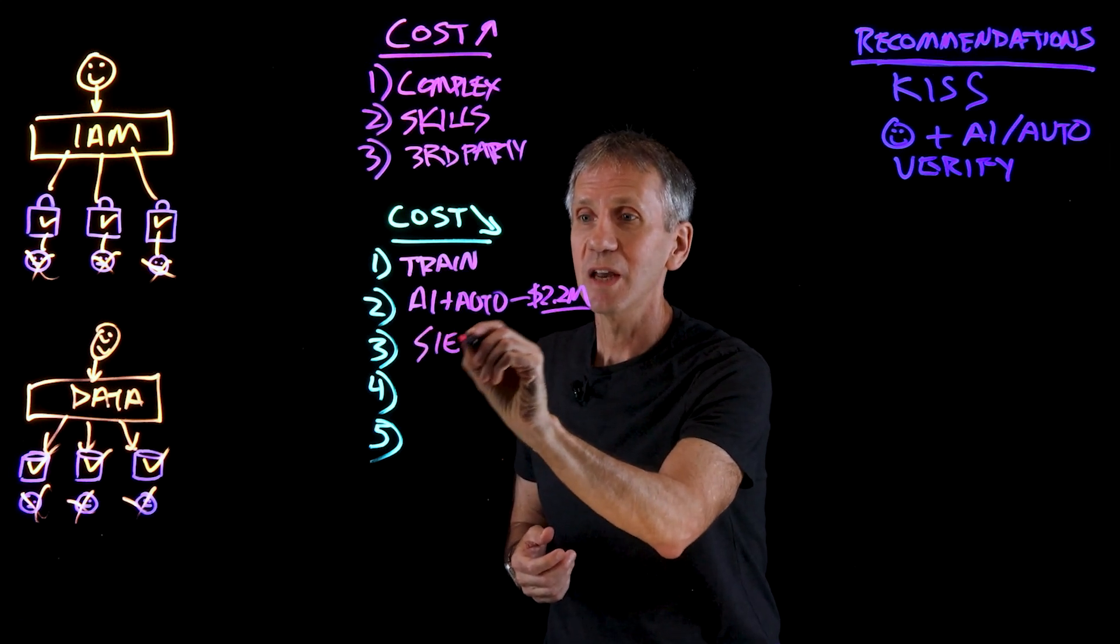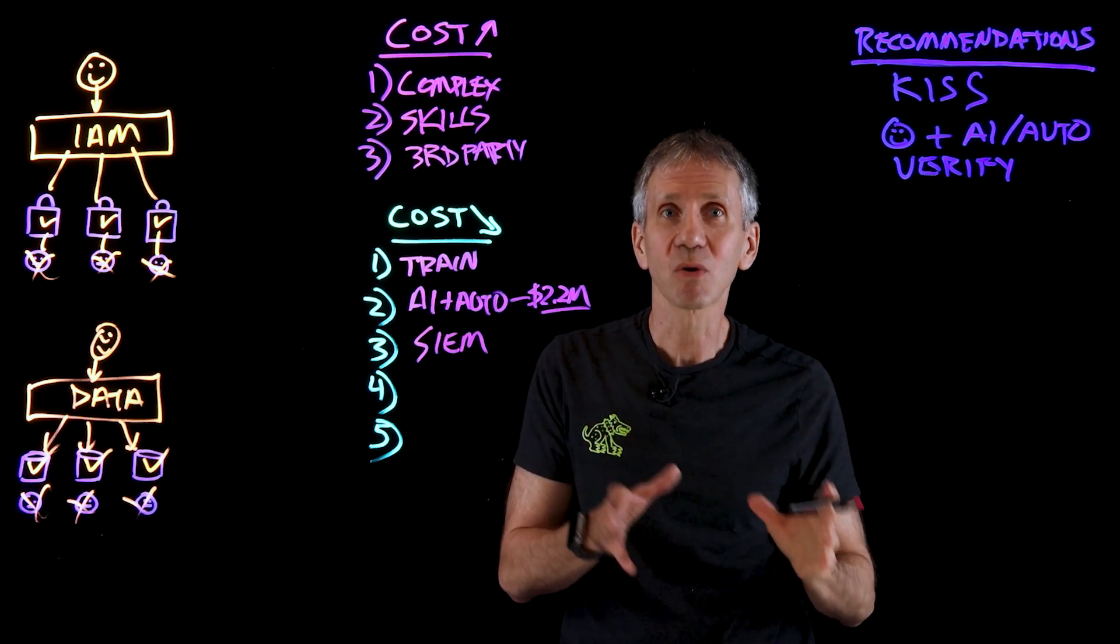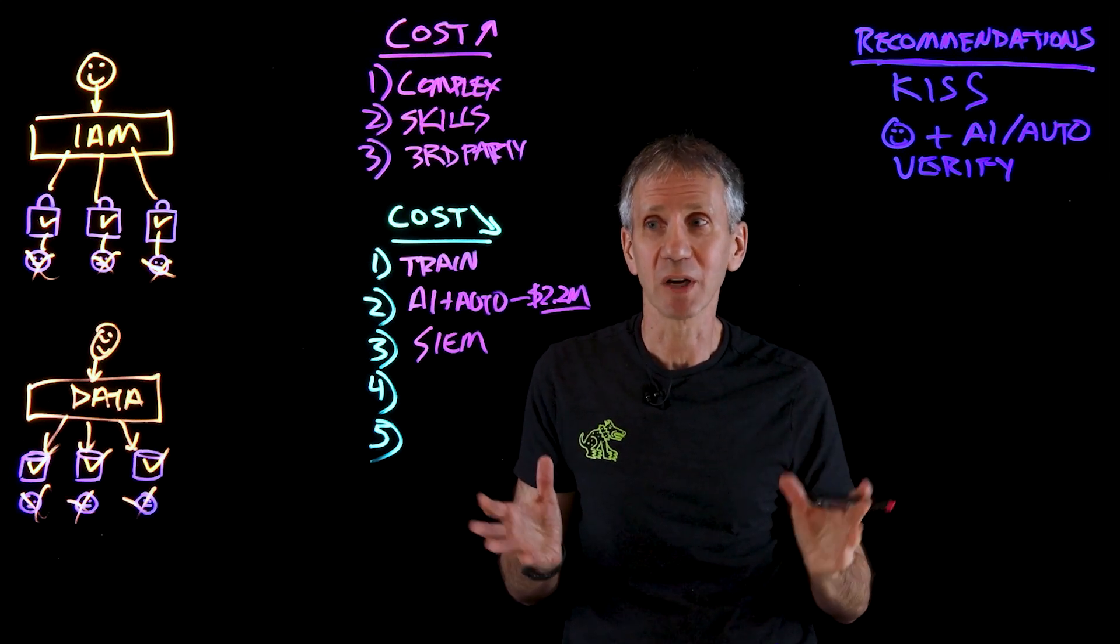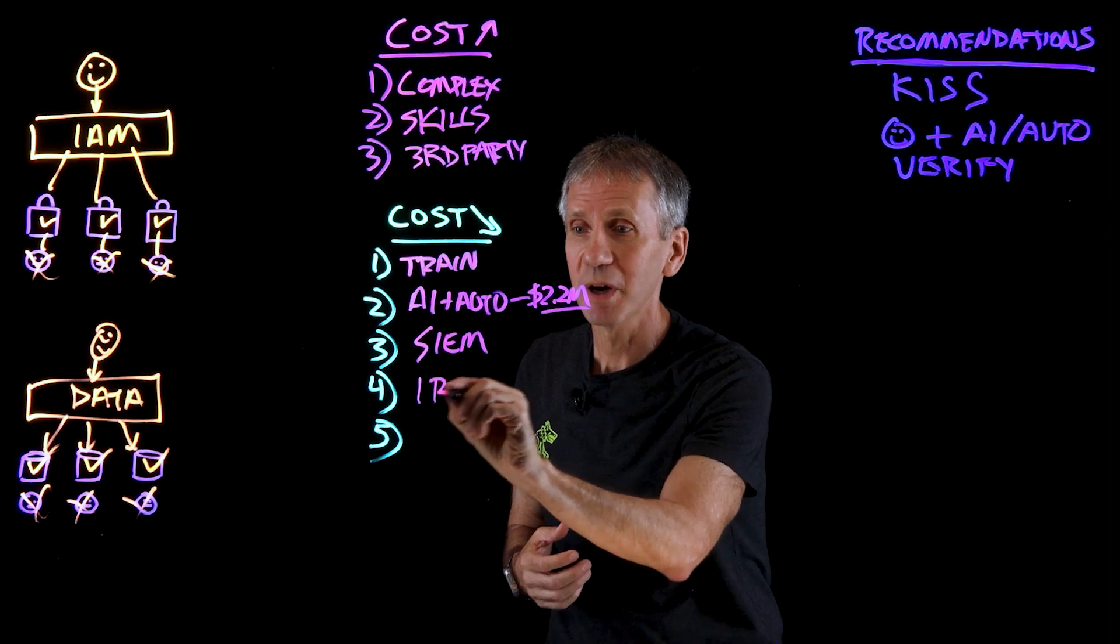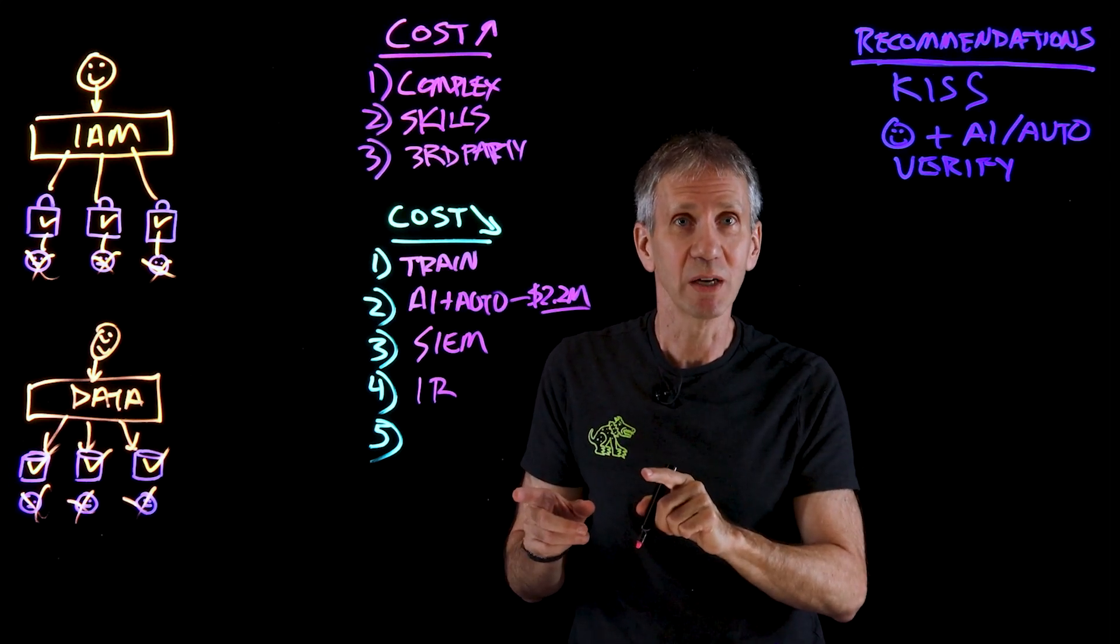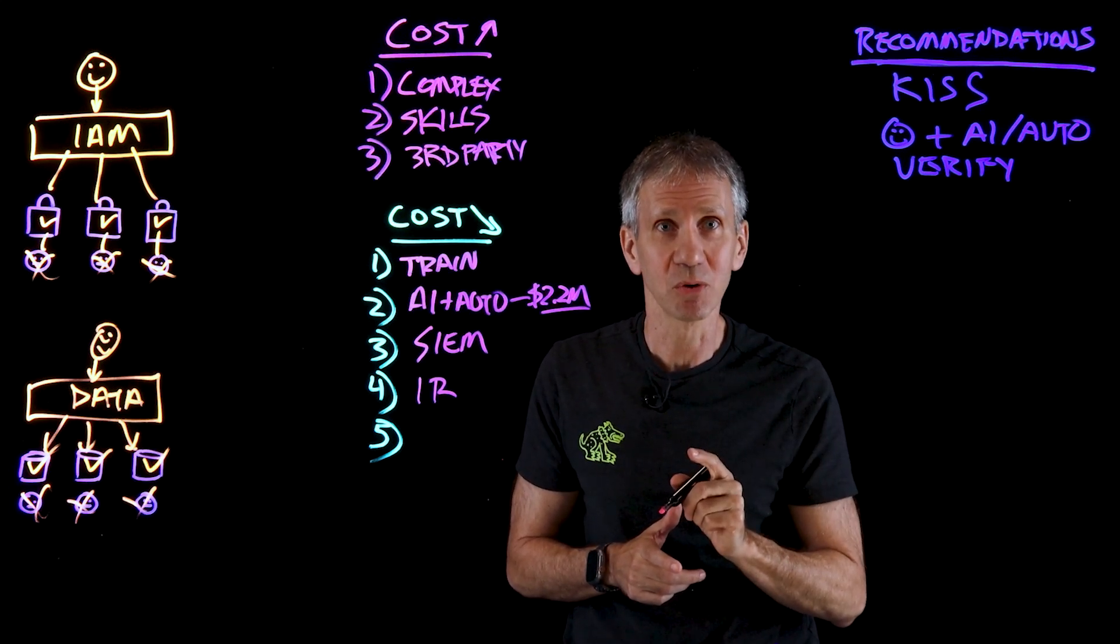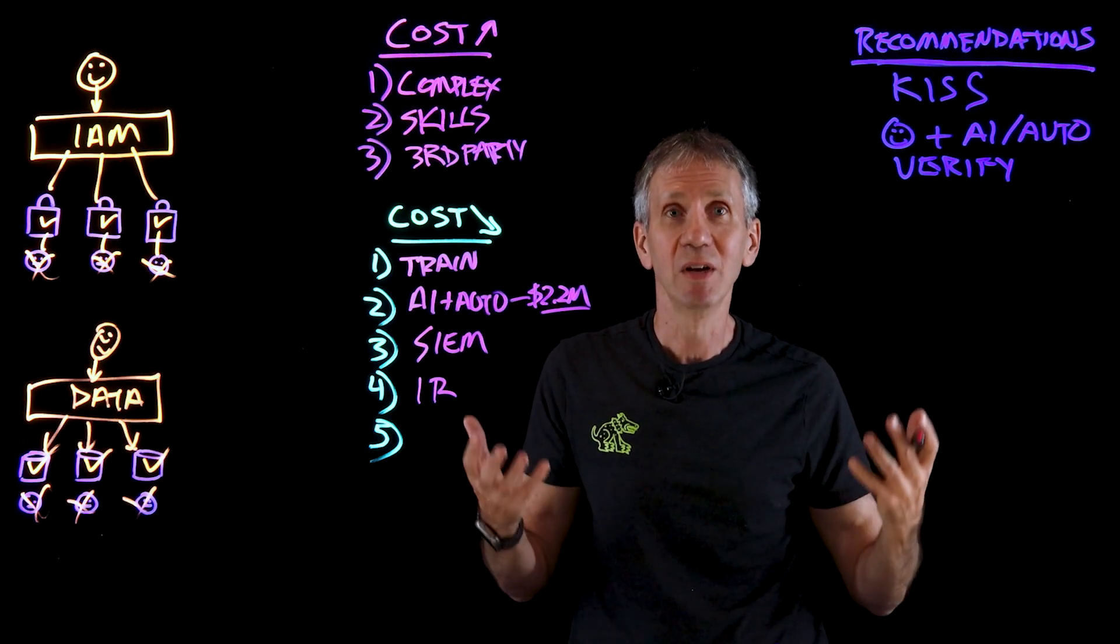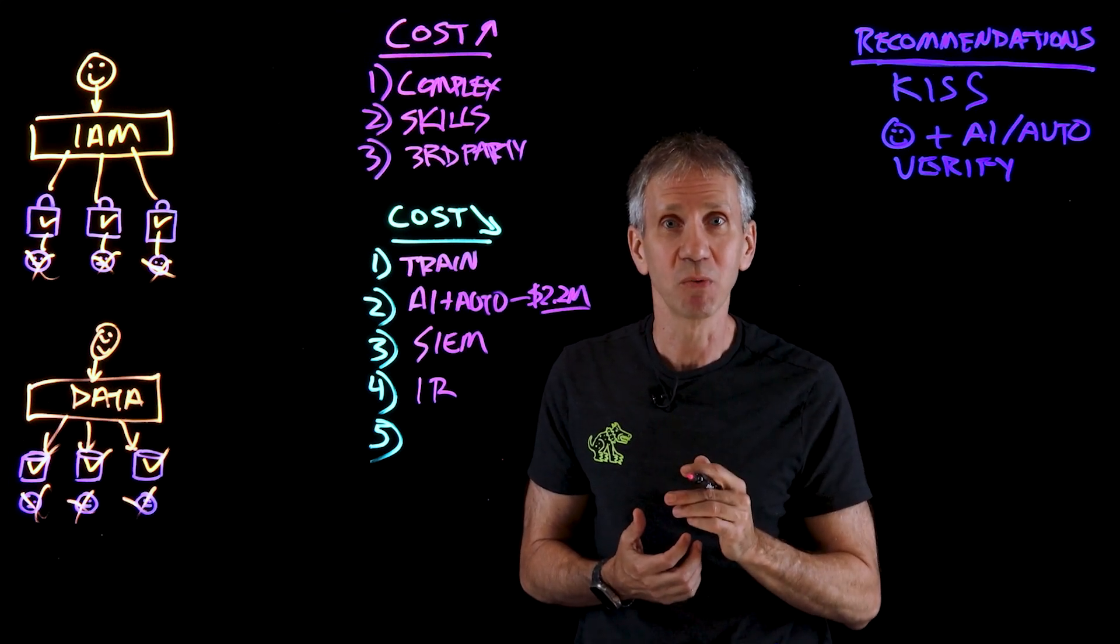Having a good security information and event management system in place is important. You can't secure what you can't see. So, you need a system that monitors all the different things that would be out there. So, a good SIEM helps you with that. Incident response planning. That is, knowing in advance where the fire extinguisher is so that you're not searching for it at the moment that your hair is on fire. That's the way you want to approach this. So, you want to plan out what all the contingencies would be and make sure that you have the plans, the tools, the processes all in place and you know how to do it in that moment when it occurs.